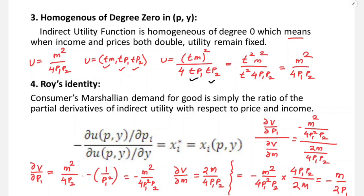This gives t² · M² / (t² · 4·p1·p2). The t² cancels, giving t^(2-2) = t^0 = 1. So the function is homogeneous of degree zero, confirming that utility does not change when income and all prices are scaled by the same factor.